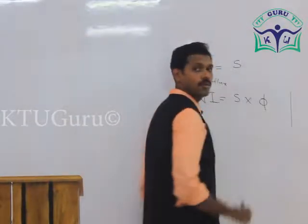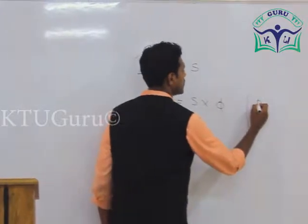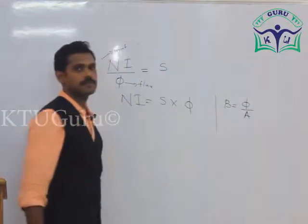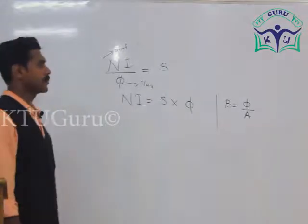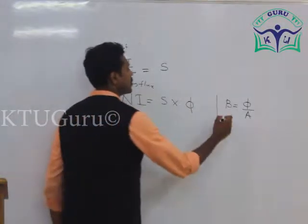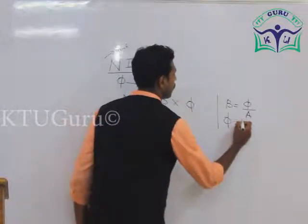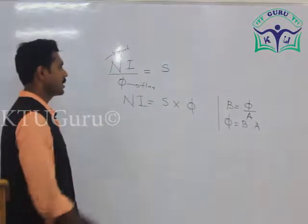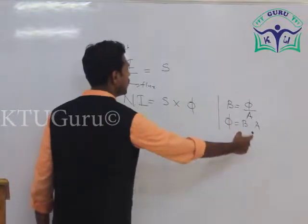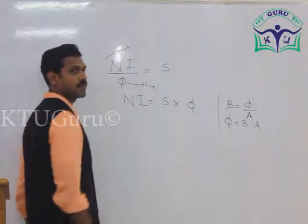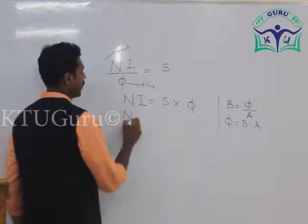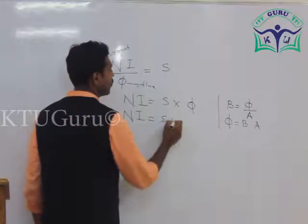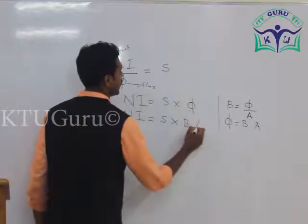You know flux density B equals flux divided by area. So, flux phi equals B into A. Substituting that flux phi equals B into A in this expression, NI equals S into B times A.